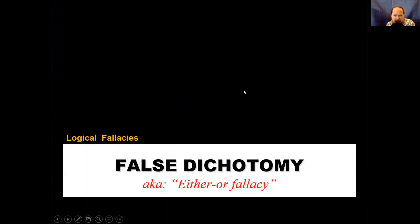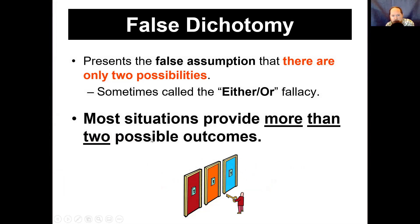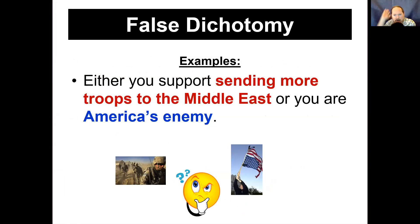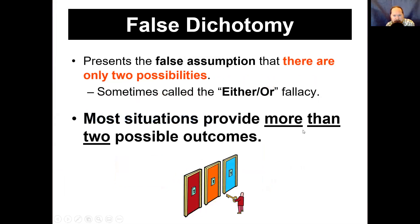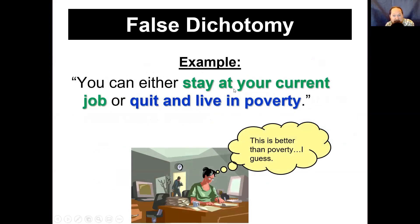False dichotomy — the either/or fallacy — says you only have two choices, either this or that, when most situations have more than two possible outcomes. 'You're either with us or you're against us.' 'You either support sending more troops to the Middle East or you are the enemy of America' — what if I don't want to send more troops because I love our country and our troops? 'If you don't drive this car, you might as well not drive at all' — what about driving another car, or the bus? 'Stay at your current job or you'll quit and live in poverty' — couldn't you find a better job?